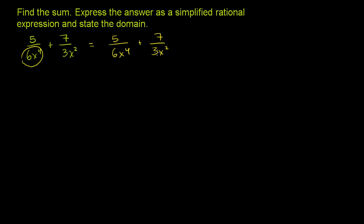So how do we make 3x squared into 6x to the 4th? Well, we're going to have to multiply it by 2 to make the 3 into a 6, and then multiply it by another x squared. So we're going to have to multiply it by 2x squared. Now we can't just multiply only the denominator by 2x squared.